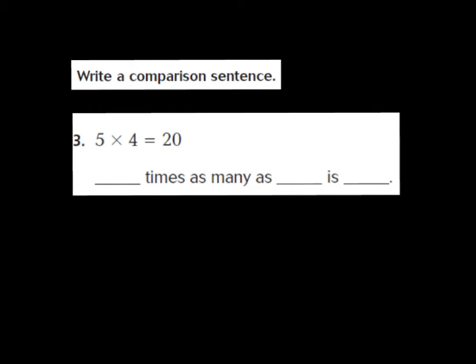We're going to jump down to number three. Number three says five times four equals 20 — that's the equation they give us. They want us to write a comparison sentence. The blanks say: hmm times as many as hmm is hmm. Remember, that equal sign is going to go to the 'is.' So I know it's going to be 20. Let's fill in 20 there. And then we can say: five times as many as four is 20. Now let's look at the comparison model that goes to the sentence and to the equation.